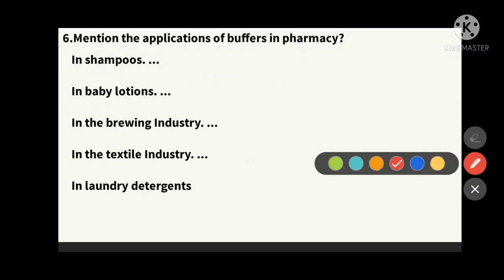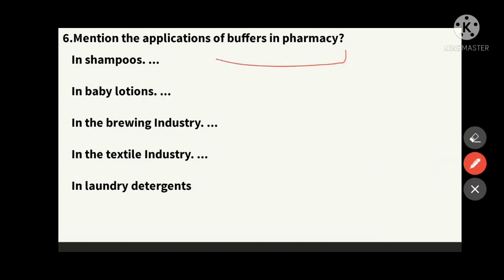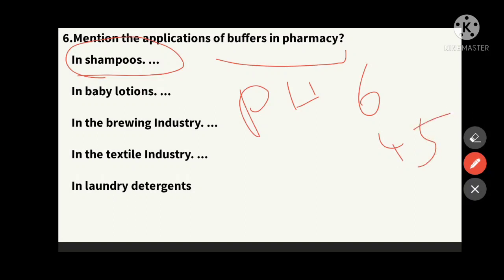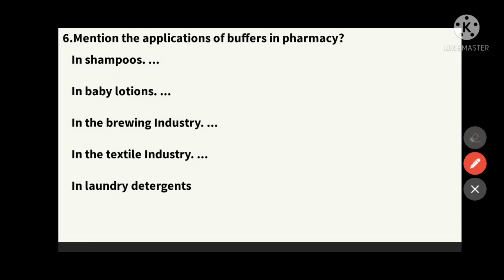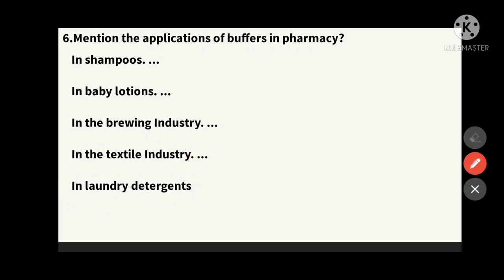The sixth question: mention the applications of buffers in pharmacy. Buffers play a vital role in pharmacy. Buffers are used in shampoos to maintain pH at approximately 4.5 to 6, in baby lotions, and in vaginal washes like V-wash where a pH of 3.5 is common. Buffers are also important in brewing industries, alcoholic industries, textile industries, and laundry detergents.